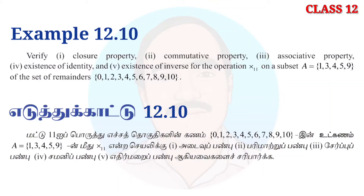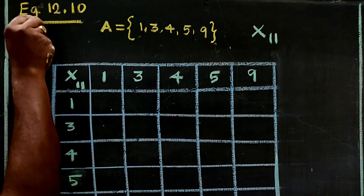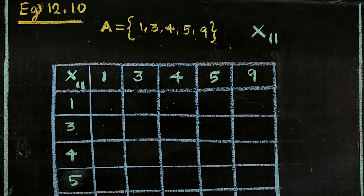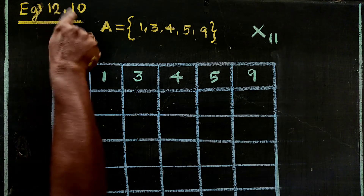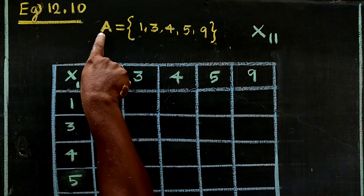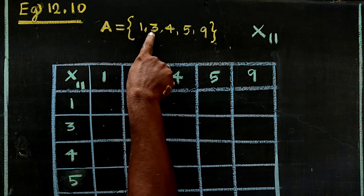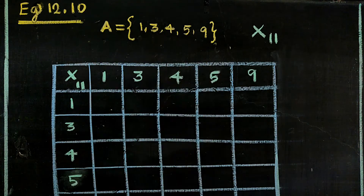If you want to see this, you can connect with Example 12.10. Here A is equal to {1, 3, 4, 5, 9}.